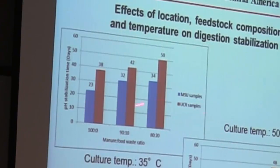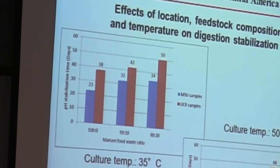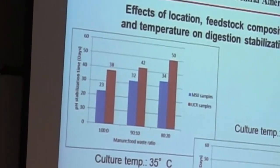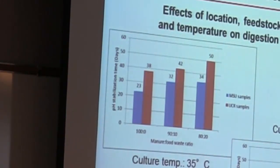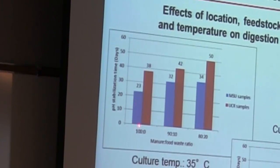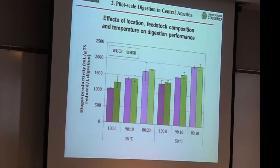On the research side, they looked at startup time. When we start cold with a digester, it's a biological system and it takes time to acclimate to temperature and feedstock. We looked at startup time on different digesters using different ratios of manure to food waste — from 100% manure to 80% manure and 20% food waste. Our permits in the states allow a traditional farm to go 80-20 blends. We also looked at it across two different temperatures, with the blue bars representing Michigan State's northern climate community and the red bars representing the local community from Costa Rica.